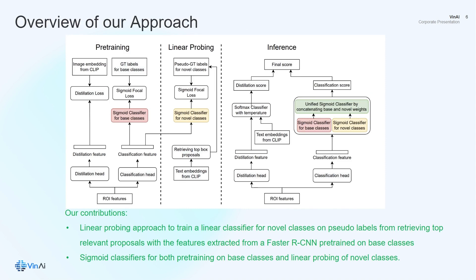Here's an overview of our approach. After pre-training on base classes, we retrieve top-relevant proposals as pseudo-labels and train linear classifiers for novel classes. We also propose using sigmoid classifiers instead of traditional softmax, which predict class scores independently, forming a unified classifier for both base and novel classes during testing.